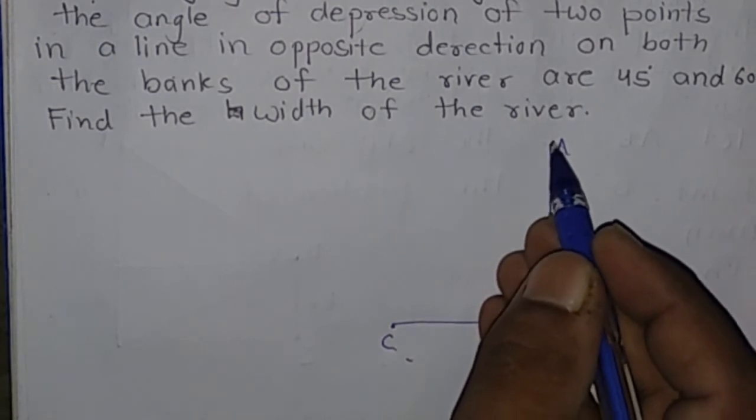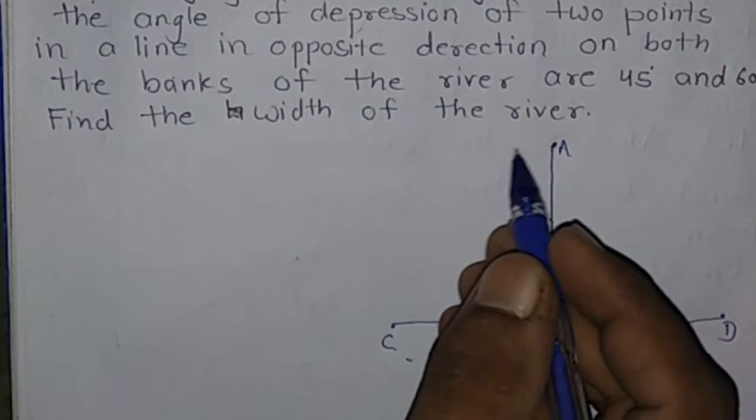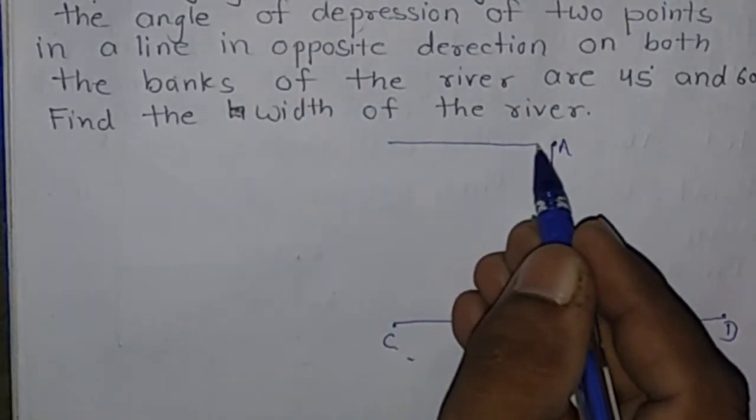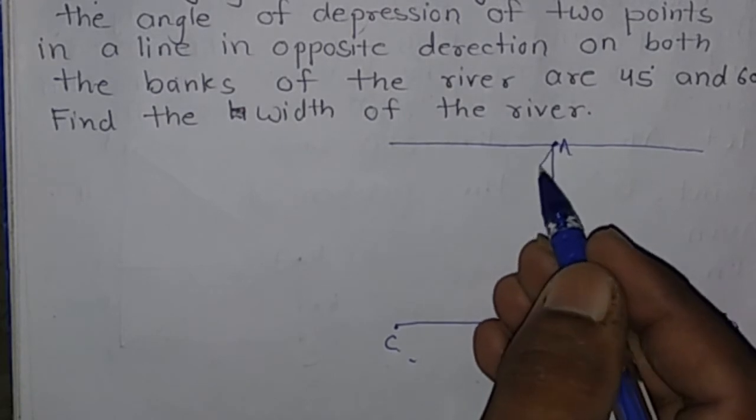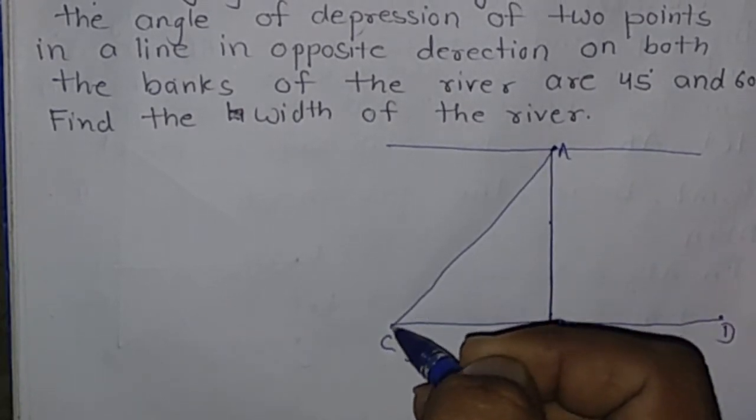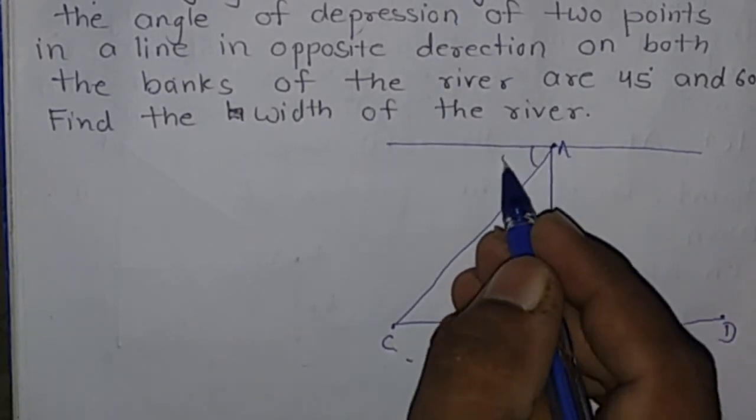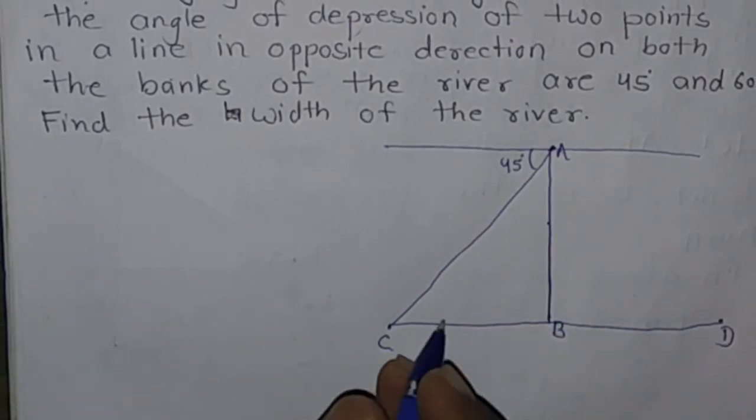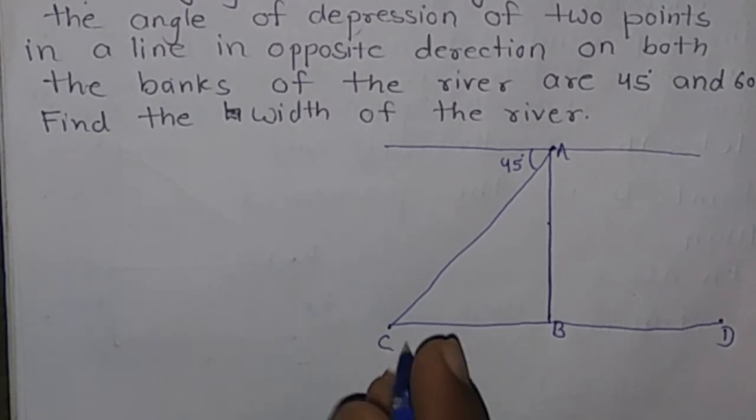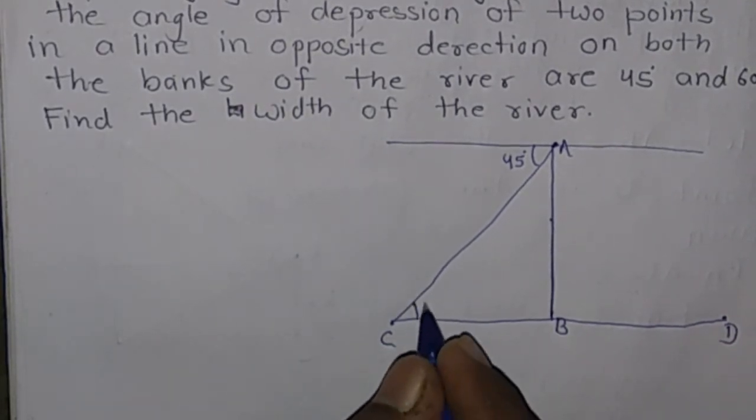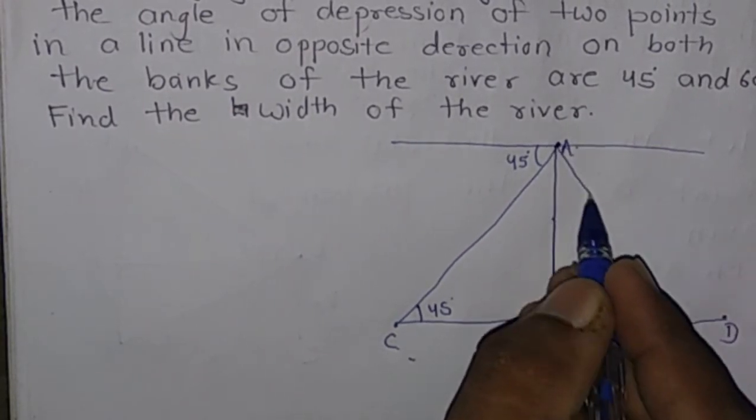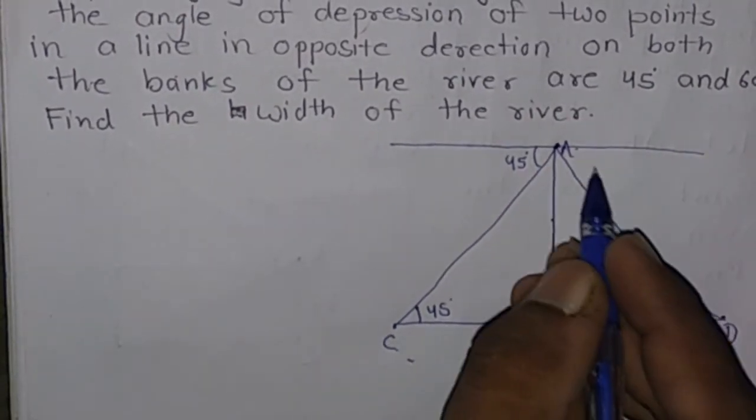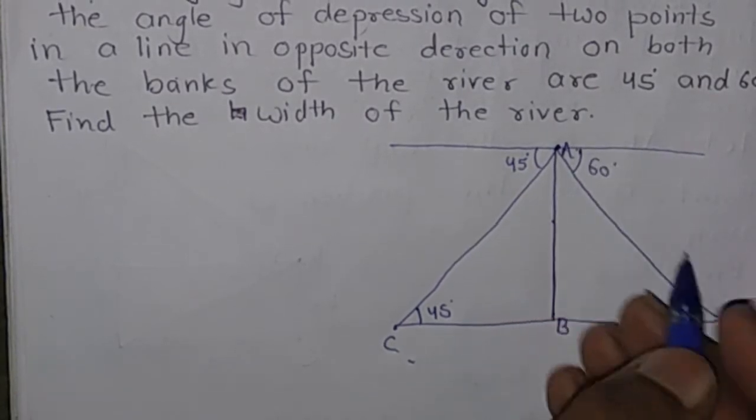From the aeroplane, the angle of depression to the first bank is 45 degrees and to the second bank is 60 degrees.